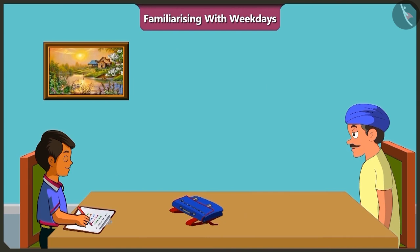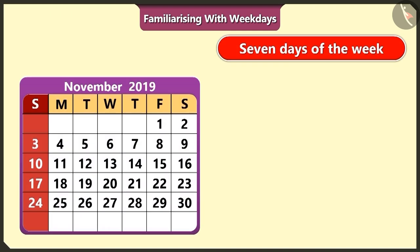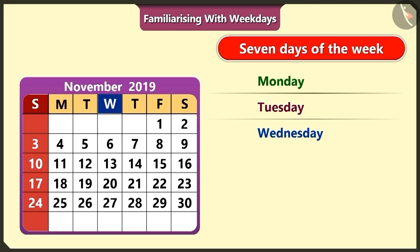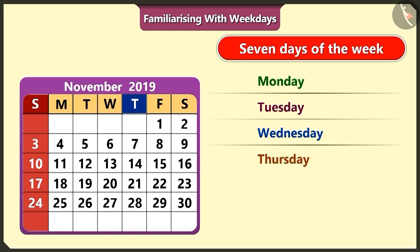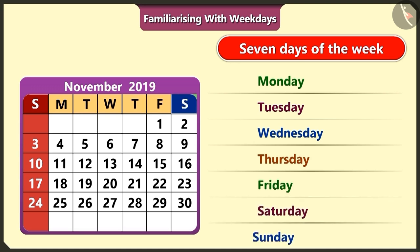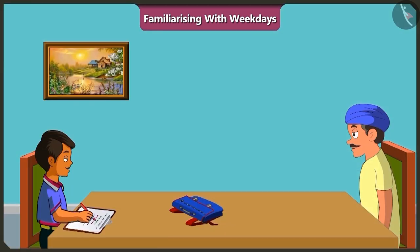Hey, Chotu, what happened? Uncle, you told me about the seven days of the week — Monday, Tuesday, Wednesday, Thursday, Friday, Saturday and Sunday. But today my teacher said that there will be a drawing period tomorrow and we should bring a colour box. But what day of the week is tomorrow? I don't understand. Please tell me, Uncle.